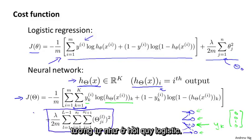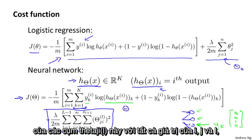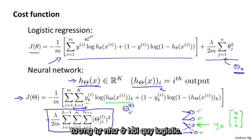This summation term looks really complicated, but all it's doing is summing over these terms theta_{j,i}^{(l)} for all values of i, j, and l, except that we don't sum over the terms corresponding to these bias values, like we had for logistic regression.